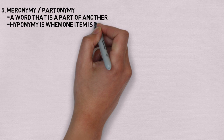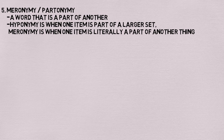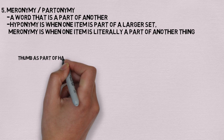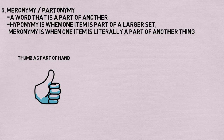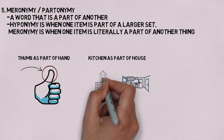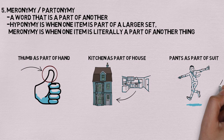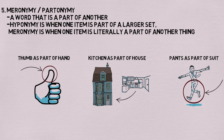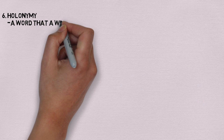Our fifth lexical relation is meronymy, often called partonymy. Meronymy is when one word is an actual physical part of something else. While hyponymy deals with abstract categories, meronymy deals with structural components. A thumb is a meronym of hand because a thumb is an actual component of a hand. Likewise, a kitchen is a meronym of a home, and pants are a meronym of a suit. Note that pants are not physically connected to the jacket of a suit, yet we would still say they are a meronym because the suit is not complete without the component of pants.